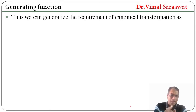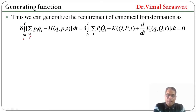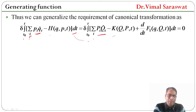Thus we can generalize the requirement of canonical transformation: delta of integral from T0 to T of sigma_i (p_i q_i_dot minus H) dt equals delta of integral from T0 to T of [sigma_i (P_i Q_i_dot minus K) plus d/dt of F1] dt, which equals zero. Here H is a function of q, p, and t; K is a function of Q, P, and t; and F1 (the generating function) is a function of small q, capital Q, and t.